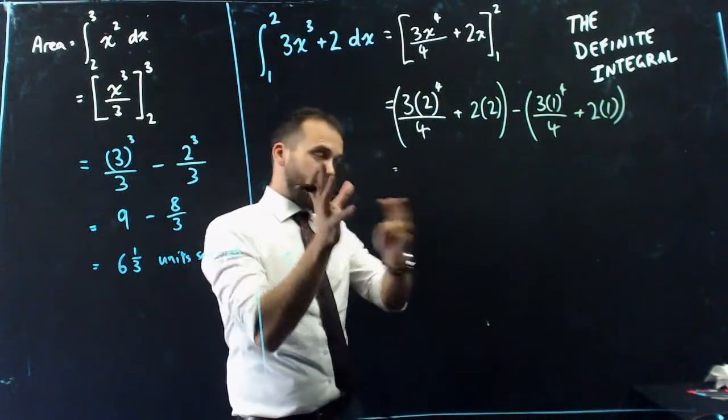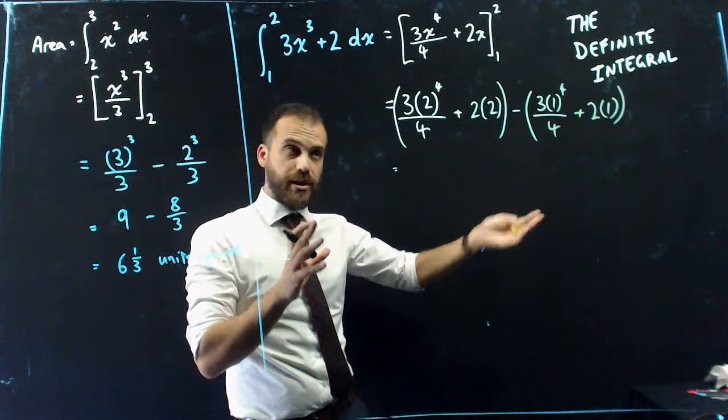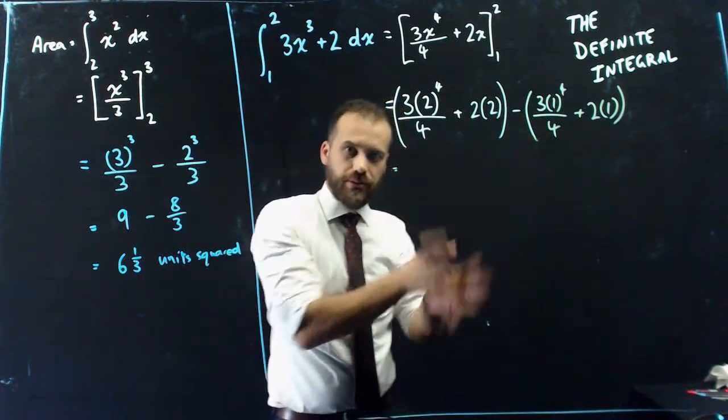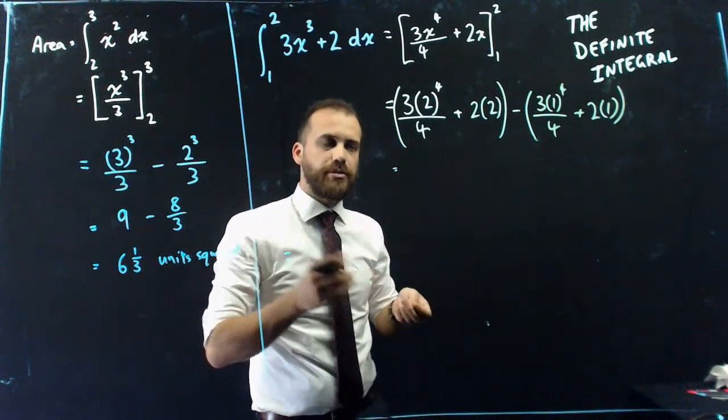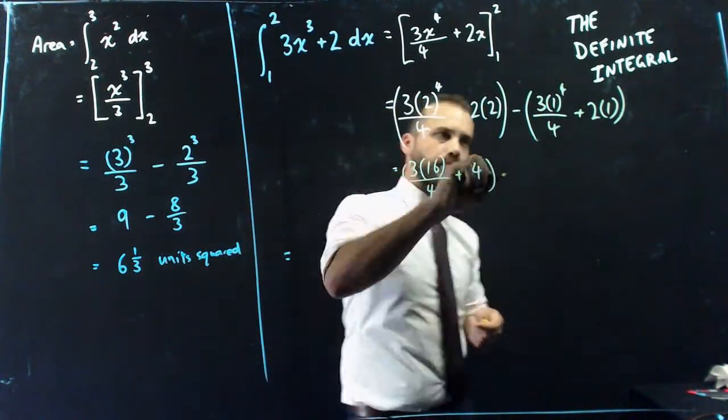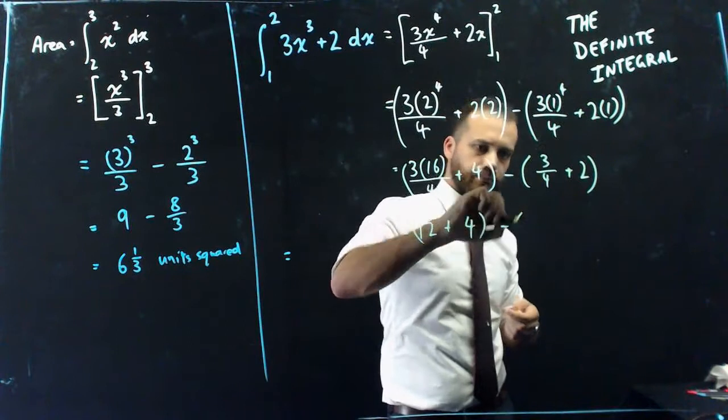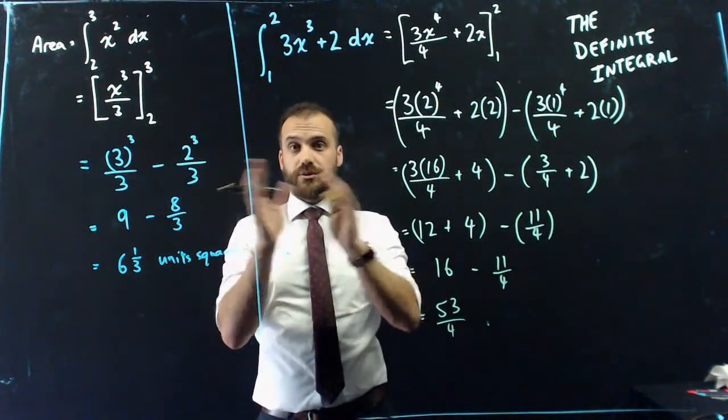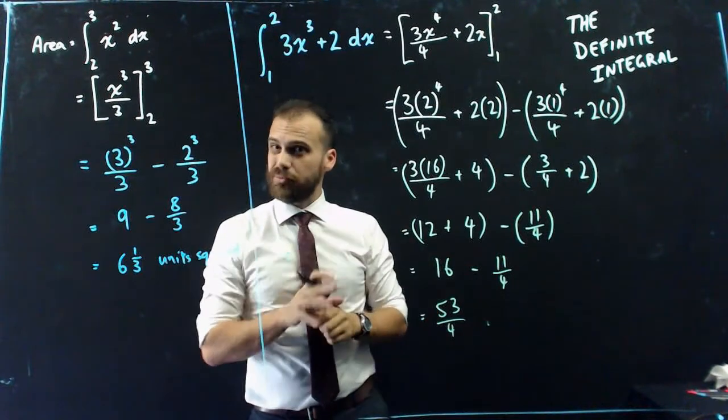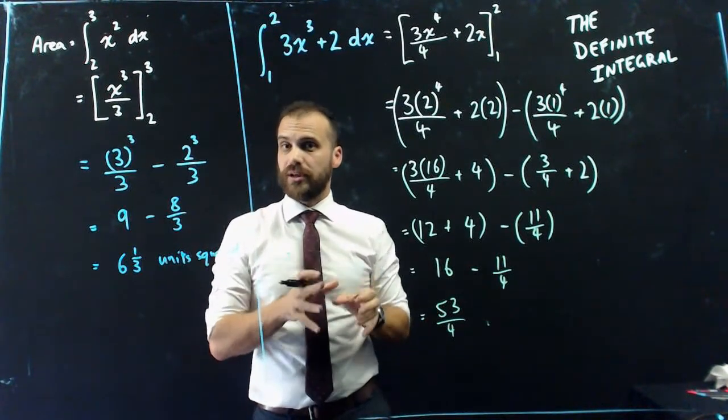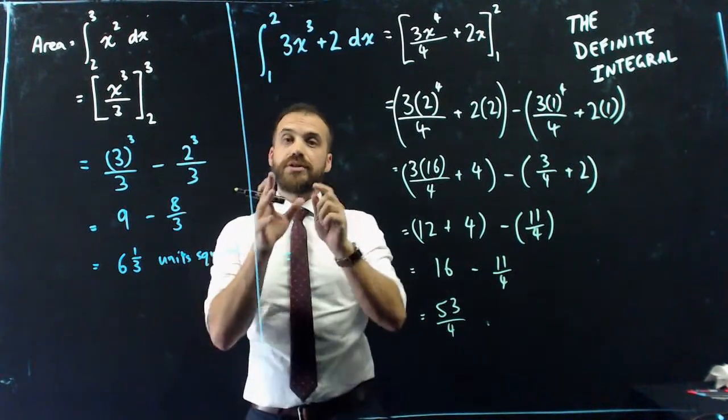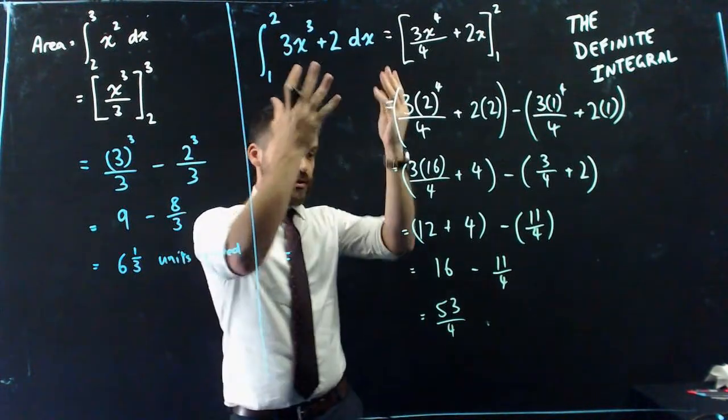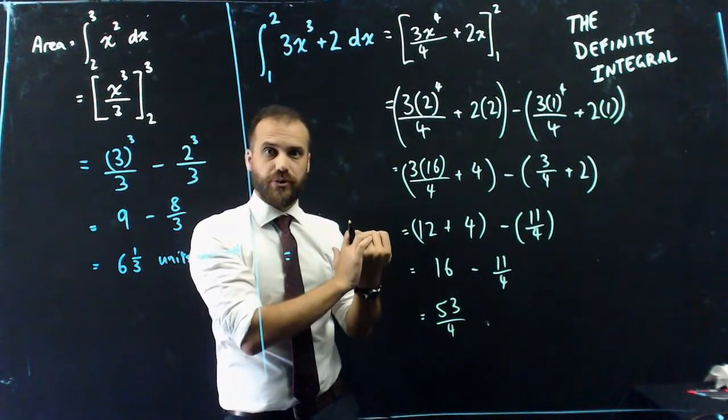All right. Essentially, it's just taking all of that now and putting it into your calculator or figuring out what's in the brackets and moving down from there. It's just really boring from here. Done. So the definite integral, we're not going to talk about area at the moment because it might not be the actual physical area, which we'll talk about in a future video. The definite integral of 3x cubed plus 2 between 2 and 1 is 53 over 4.